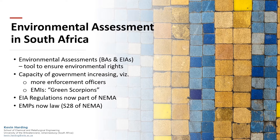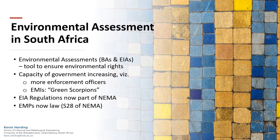In South Africa, there are essentially two types of environmental assessments: basic assessments and environmental impact assessments. The National Environmental Management Act also requires that an environmental management plan forms part of these submissions. Enforcement of these regulations has also become more strict with additional law enforcement officers and the green scorpions.